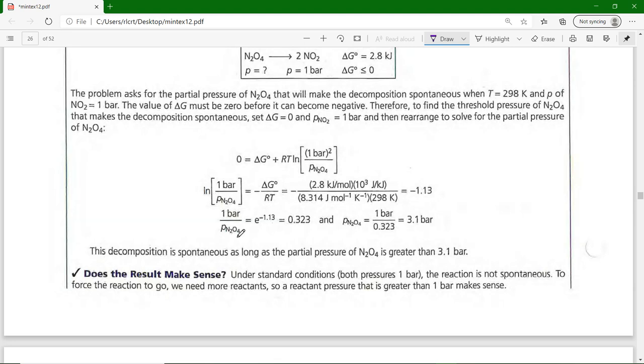I get -1.13. Then take the inverse natural log of both sides, so 1/P_N₂O₄ = e^(-1.13) = 0.323. Rearrange and you get 3.1 bar.